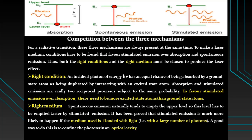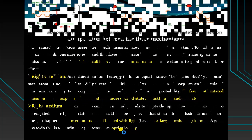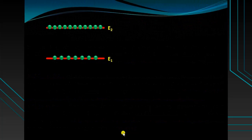Stimulated emission is much more likely to happen if the medium is filled with a large number of photons. The best way to do this is to confine the photons in an optical cavity — this is the right medium for laser production. So the right condition is when the number of atoms in excited states is greater than the number of atoms in the ground state, and the right medium is an optical cavity.